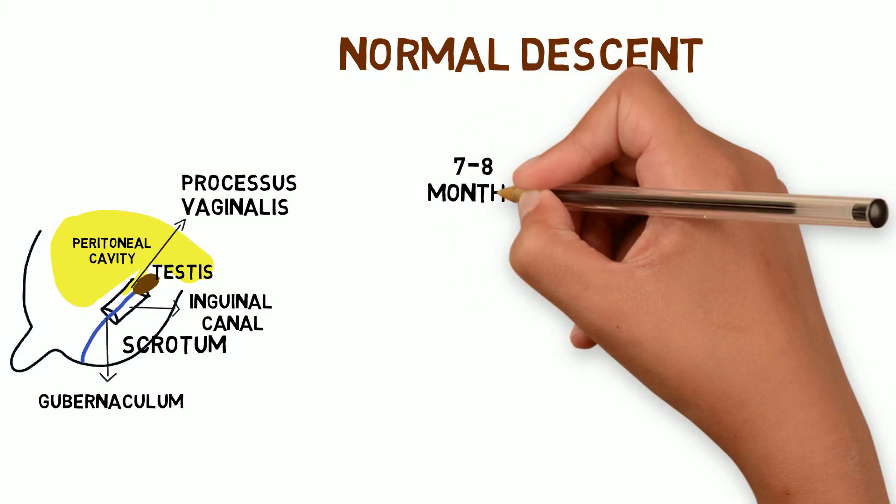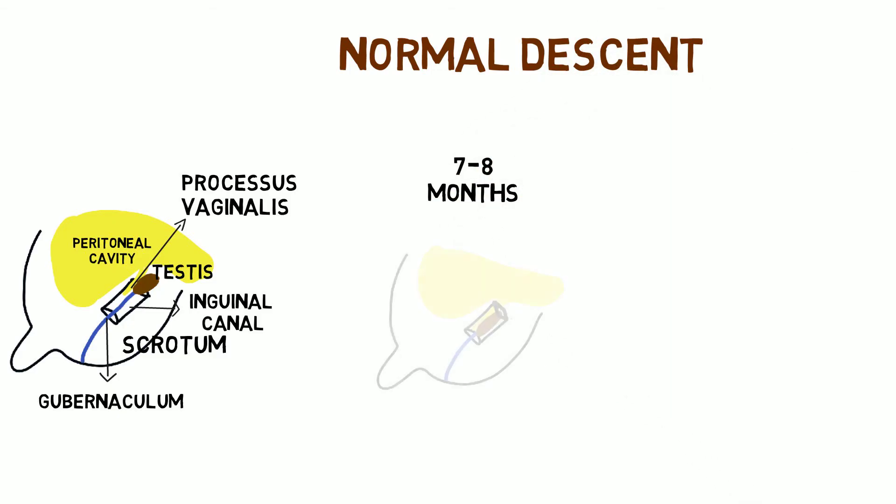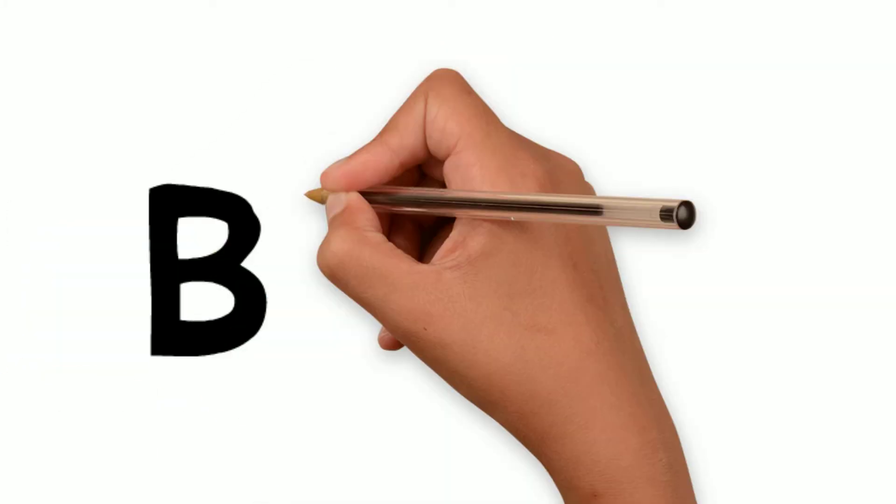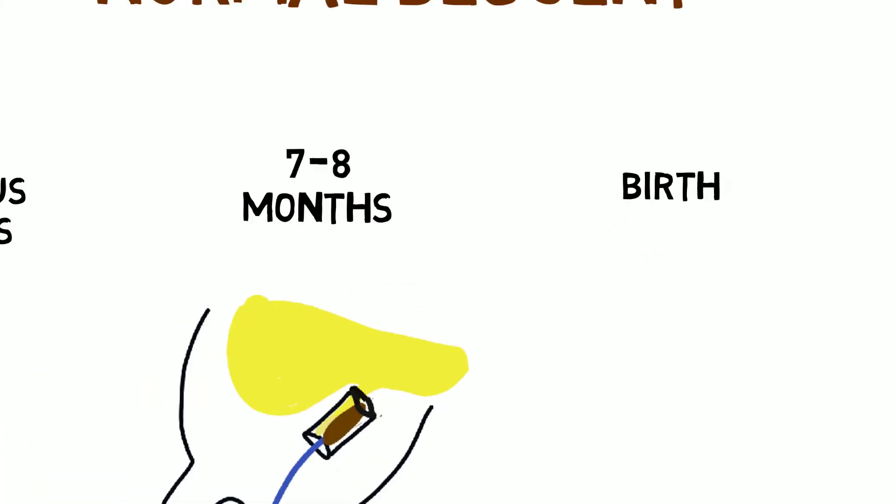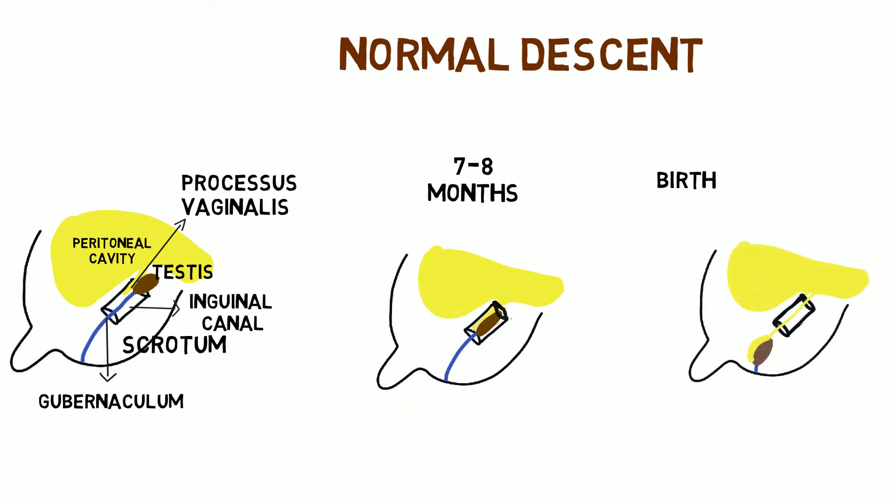By 7-8 months of intrauterine life, the testis begins its descent and is in the inguinal canal. At the time of birth, the testis has descended into the scrotum. The upper part of processus vaginalis has obliterated and the distal part becomes tunica vaginalis.